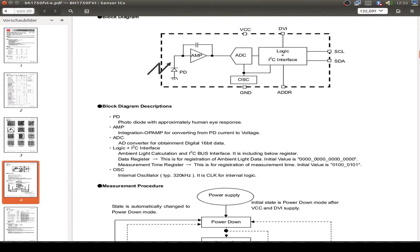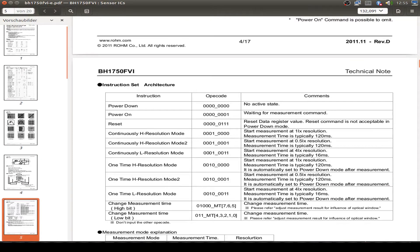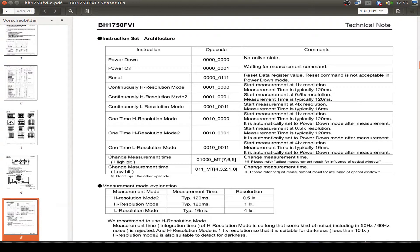For the programming we maybe have a look into the operation codes, so we can use power down, power up. We can do a continuous reading or a one-time reading and then the sensor goes to power down mode.